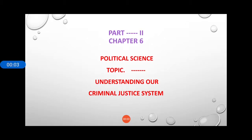Welcome back again in the second part of chapter 6, understanding our criminal justice system. In the first part, students, we read the story of Shanti and through that story, we came to know practically how legal proceedings take place in our criminal justice system and what articles mentioned in our constitution helped the concerned person get help from the state government to prove himself innocent.